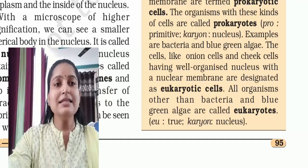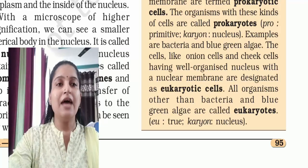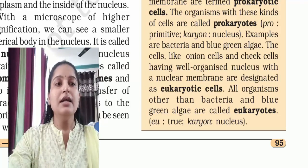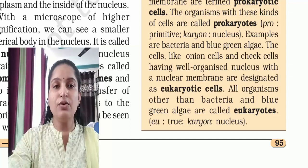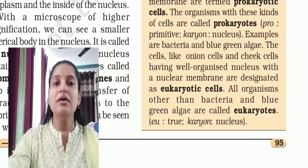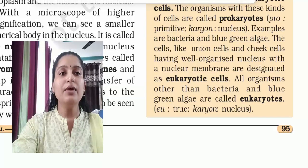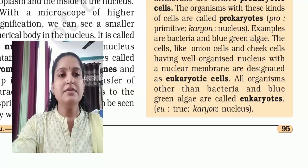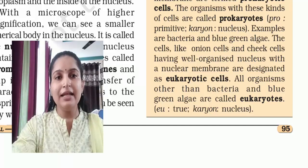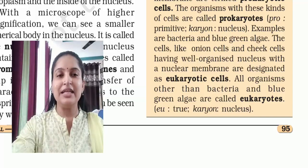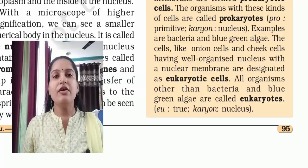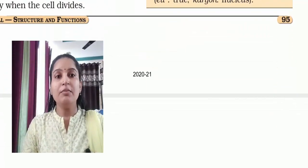Cells like onion cells and cheek cells, which have a well-organized nucleus with a nuclear membrane, are designated as eukaryotic cells. All organisms other than bacteria and blue-green algae are called eukaryotes. 'Eu' means true and 'karyon' means nucleus — so eukaryotes have a true nucleus.